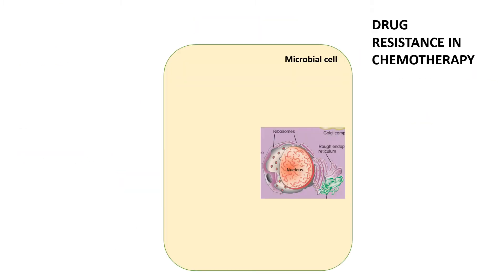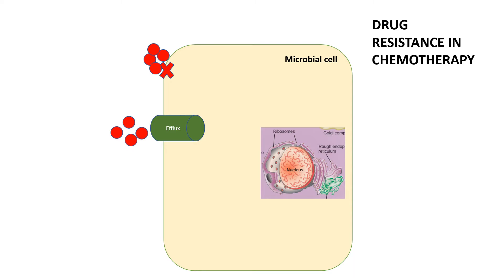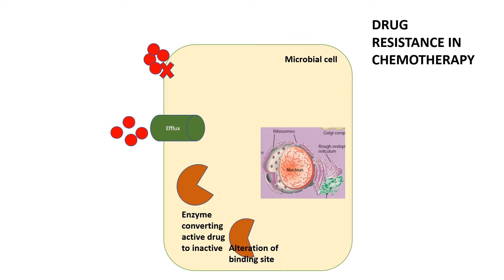Drug resistance occurs when a microbe becomes resistant to a drug over time. Mechanisms include: reduced penetration or diffusion of the drug into the microbe; generation of an efflux pump that expels the drug out of the microbial cell; synthesis of enzymes that convert the active drug to inactive forms; and alteration in the drug binding site.